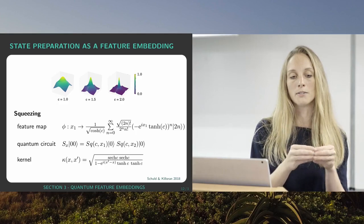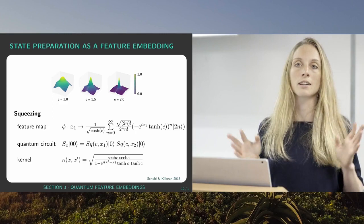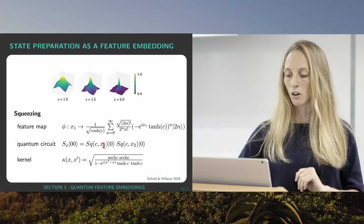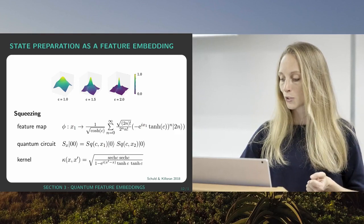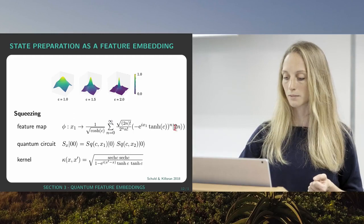And the feature map it gives rise to is absolutely horrible. I only wrote it down for one input, not two inputs. So this is how it looks like. This is actually an infinite dimensional superposition of quantum states. And the kernel it gives rise to though is actually quite simple. So this is totally classically tractable. You can write this down and do computations. And now I showed you a couple of pictures of these kernels.